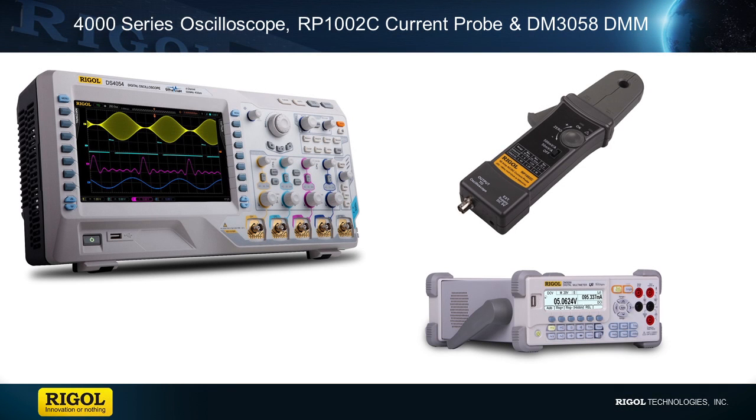In this test, we are comparing current measurements in different IoT radio configurations using Regal's 5.5-digit Bench DMM and our 4000 series oscilloscope with a current probe.